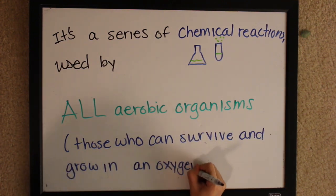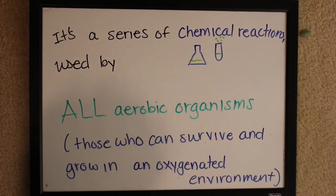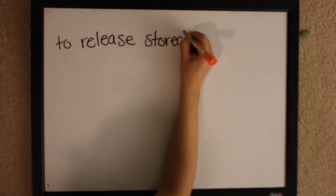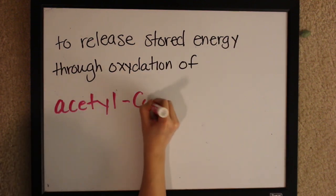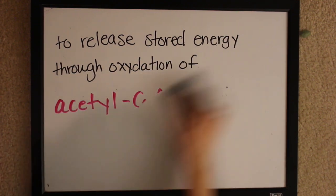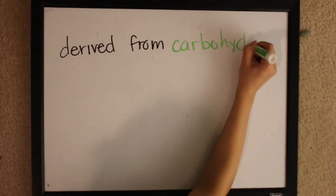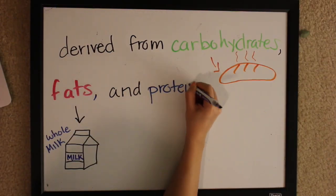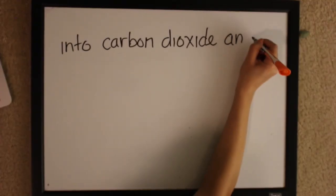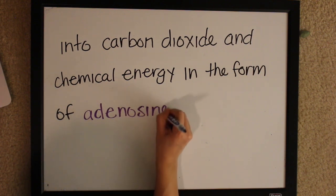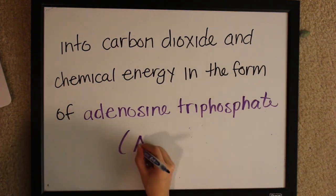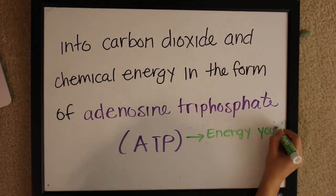The cycle releases stored energy through oxidation of acetyl-CoA, one of the molecules in this cycle. This is derived from carbohydrates like bread, fats like milk, and protein like fish, into carbon dioxide and chemical energy in the form of adenosine triphosphate (ATP). This is energy your body needs to do work.